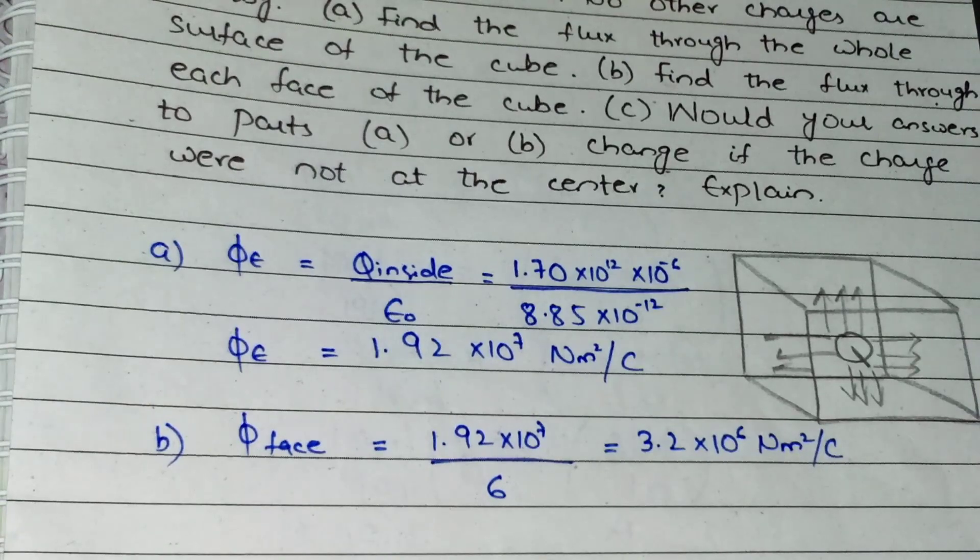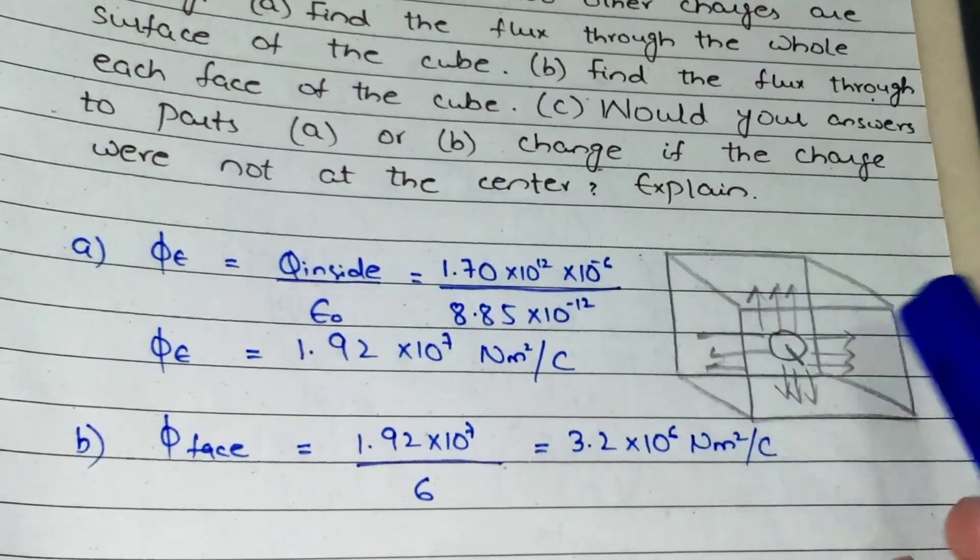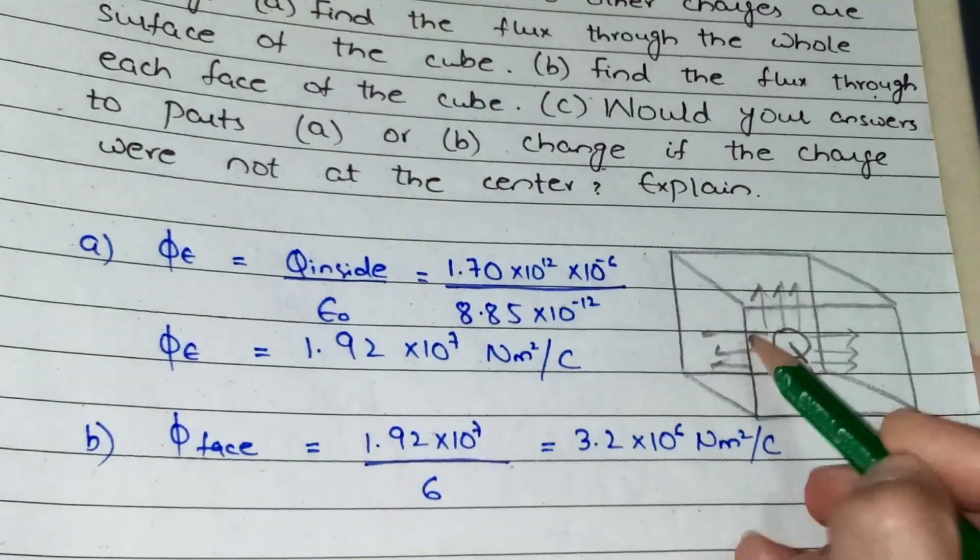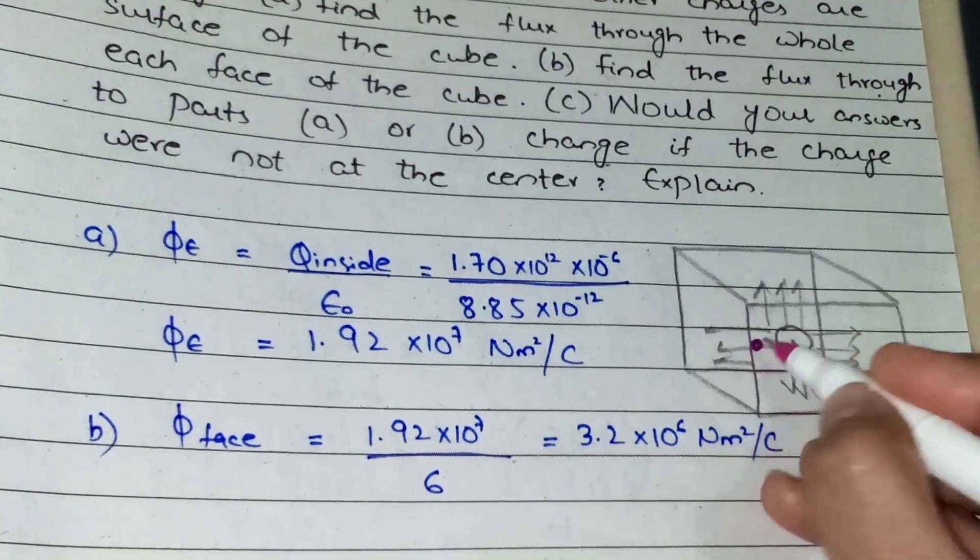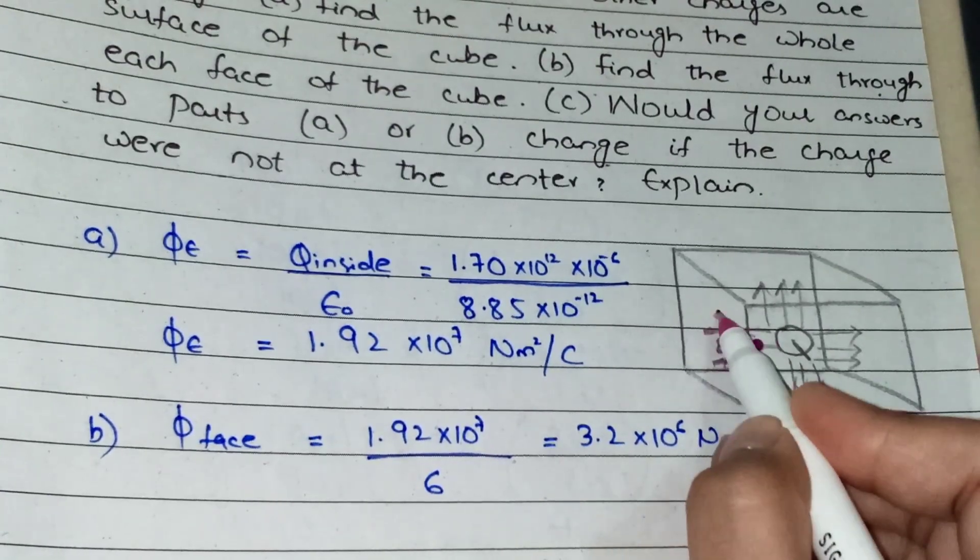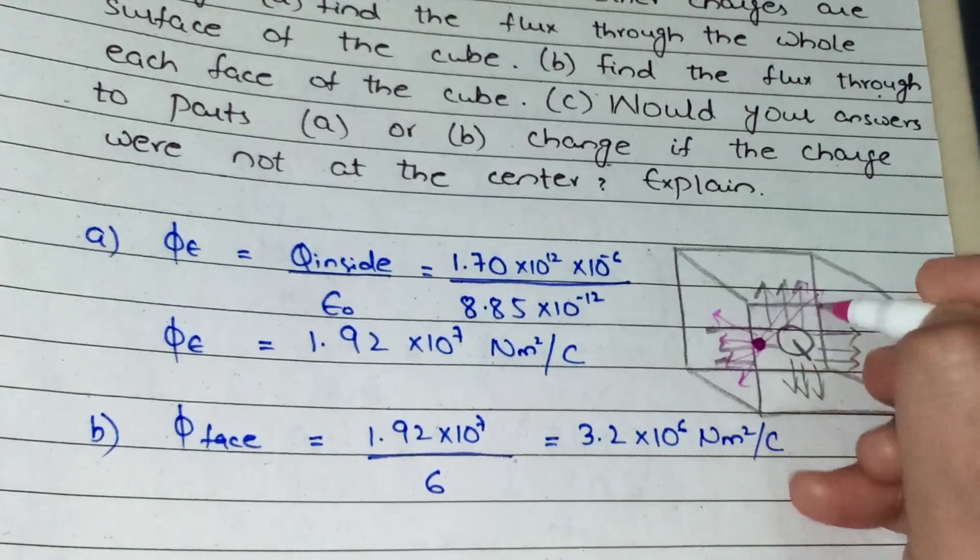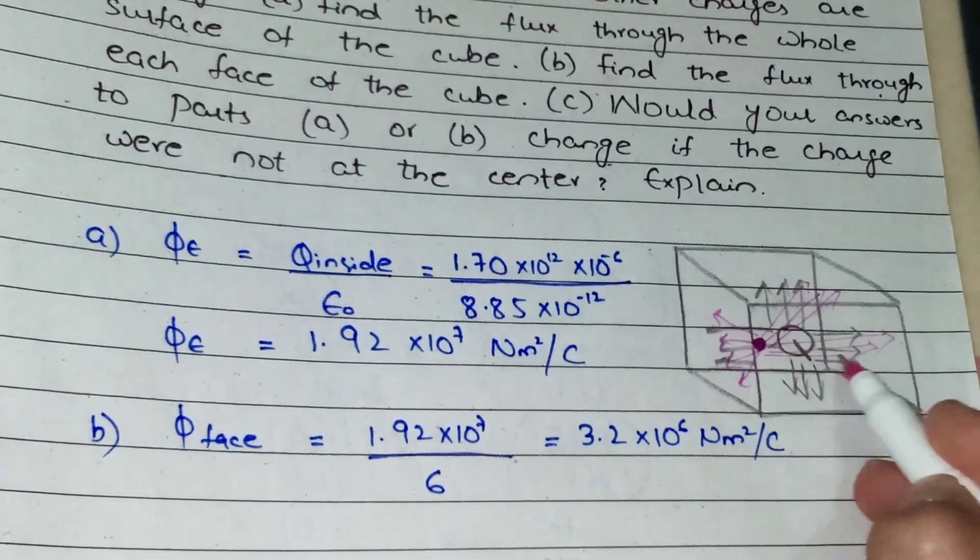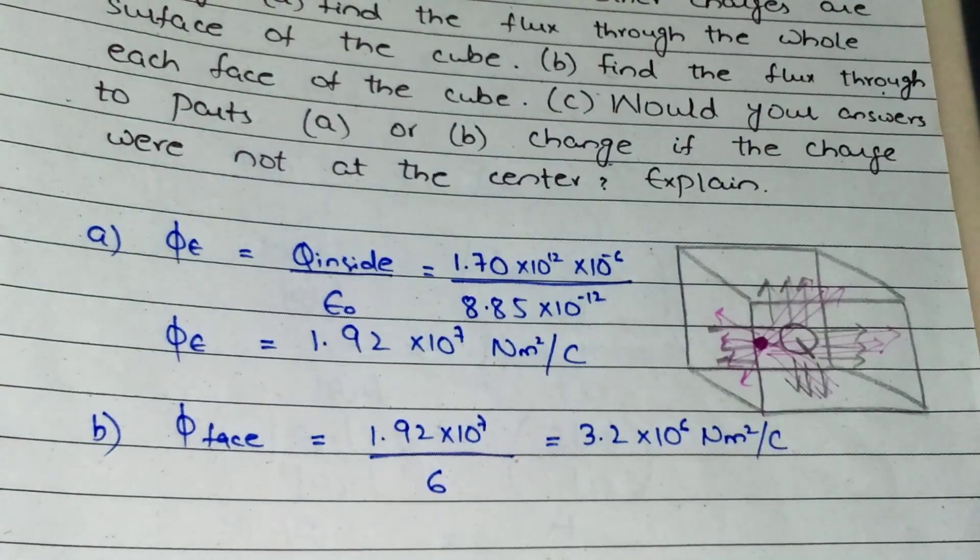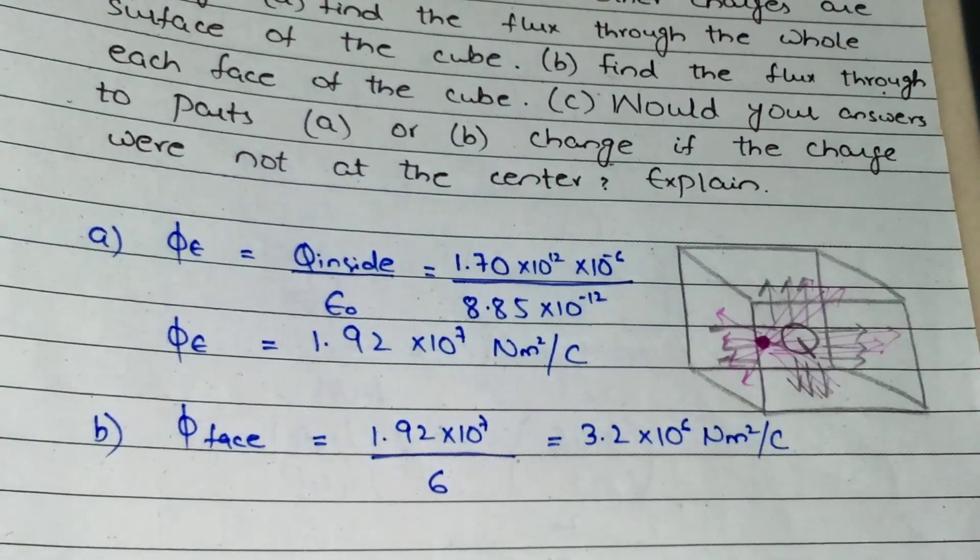For part B, I explained that because the charge is at the center, it creates the same effect on each side. However, if the charge were not at the center, different surfaces would be at different distances from the charge. The surface closer to the charge would have more flux, while the surface farther away would have less flux. So for part B, the answer would change.